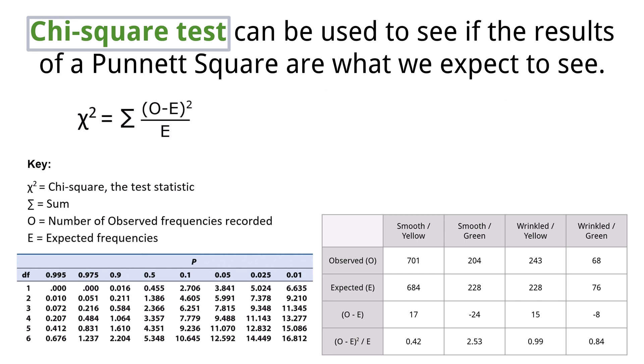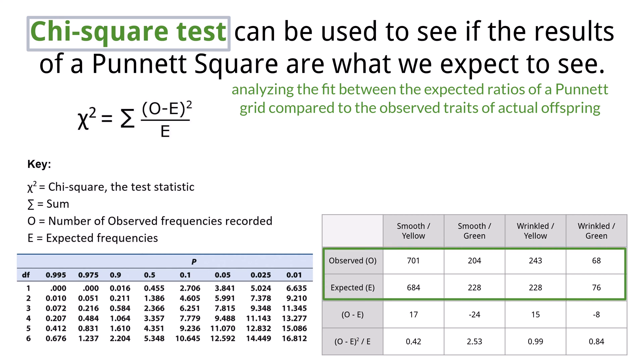Scientists use the chi-square to see if there is a good fit between the theoretical model, which in this case were the expected ratios in a Punnett grid, and what really happens in nature. If you look at the chart, you can see the table of what is observed and expected when pea seeds with the traits of yellow and green, wrinkled and smooth, are crossed. Remember, in a dihybrid cross, we expect to see that 9 to 3 to 3 to 1 ratio.